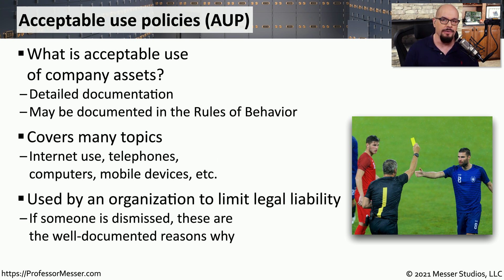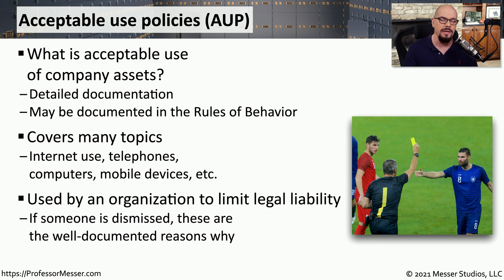It's important to document this information so that you have something to go back to if one of these rules is broken. This provides the employer with a way to set expectations across everyone in the organization. And if any of these rules are violated, they can specify exactly which part of the AUP was not followed.